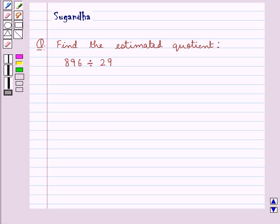Hello and welcome to the session. In this session we discuss the following question which says, find the estimated quotient 896 divided by 29.